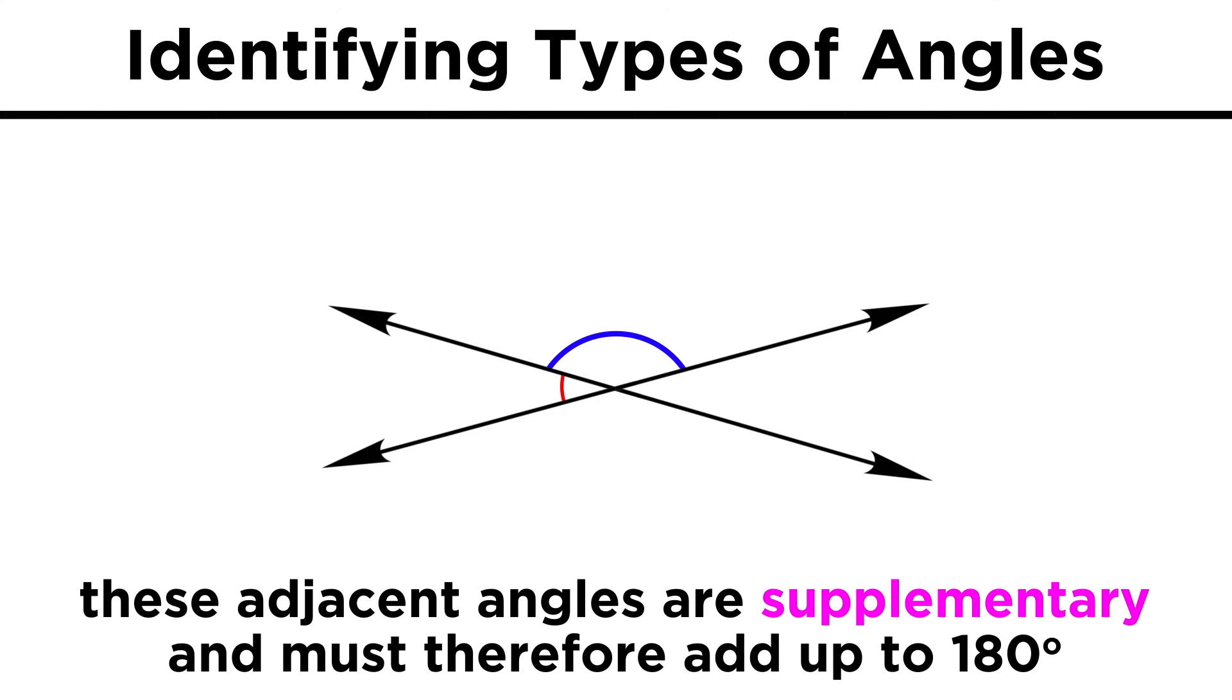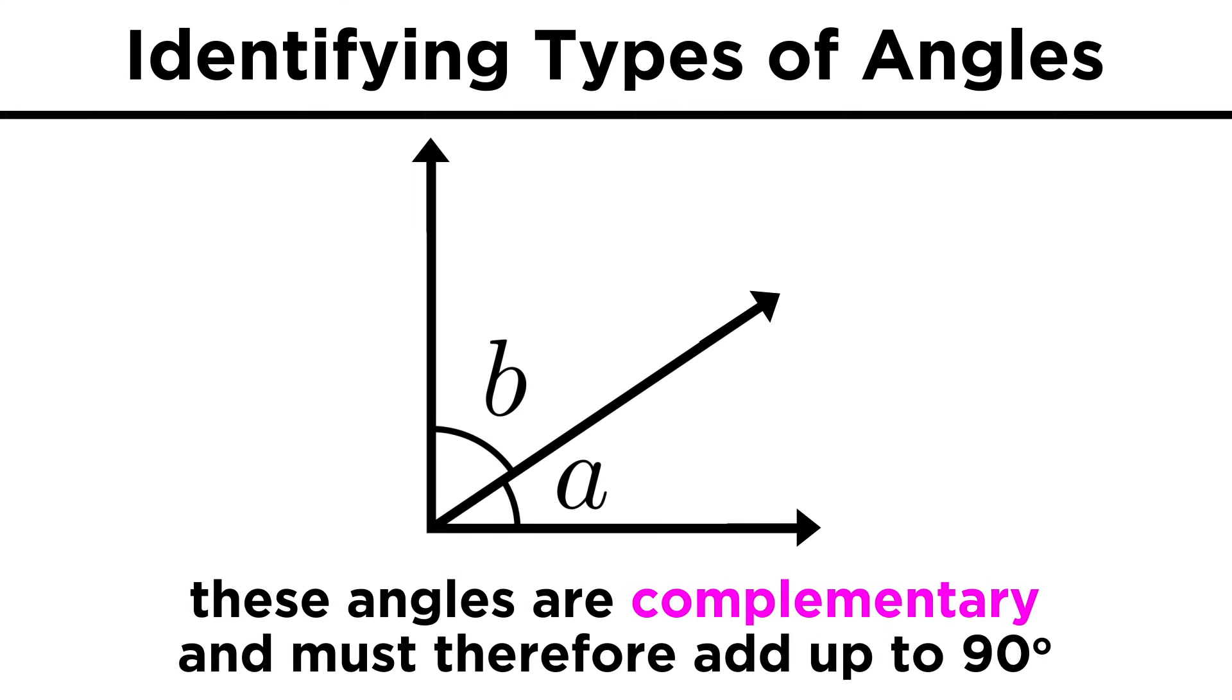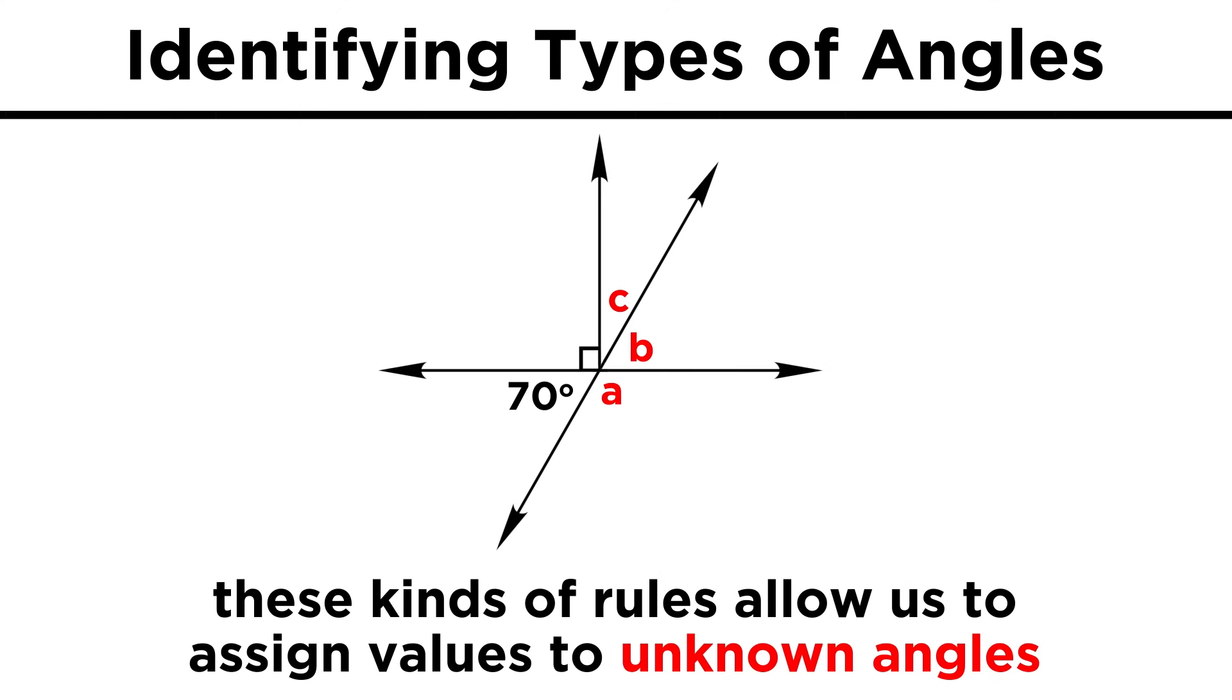We also have adjacent angles, which are the ones that are next to each other, and if these are the result of two lines crossing like this, these are also called supplementary. We can also have complementary angles, which add up to 90 degrees. With these rules alone, we should be able to look at a diagram like this with some unknown angles, and solve for the unknown angles on the basis of these rules.